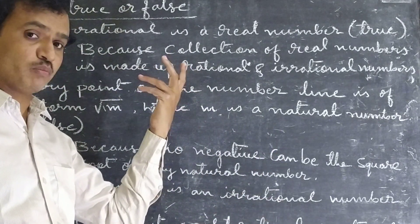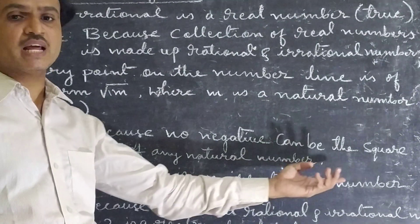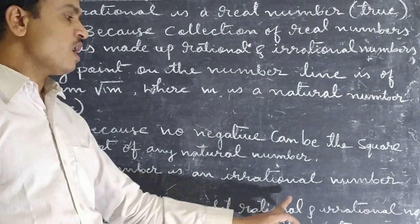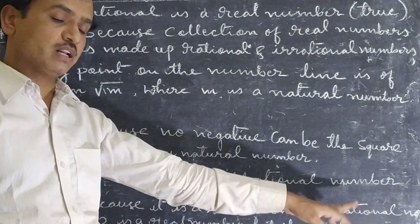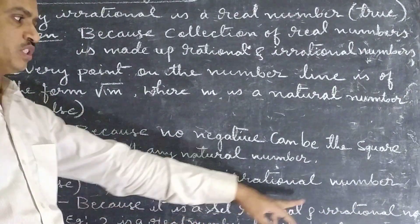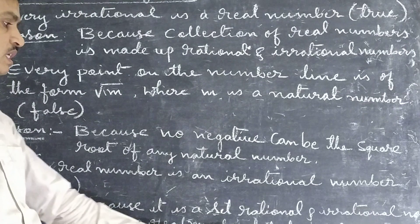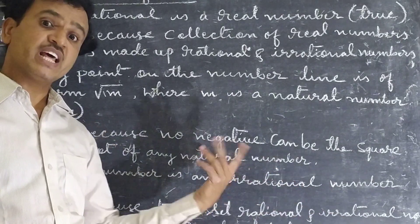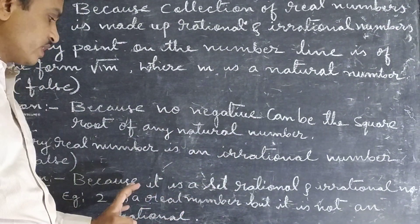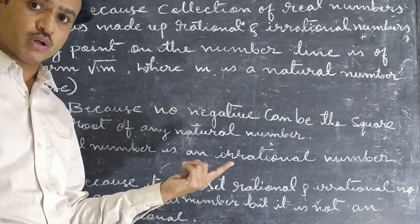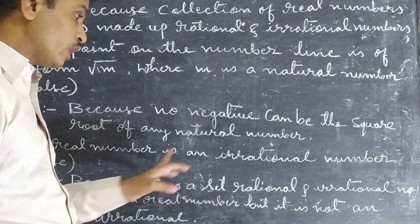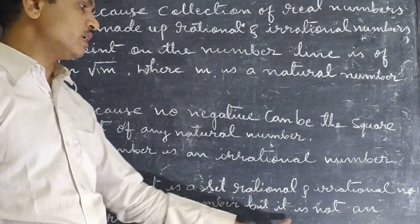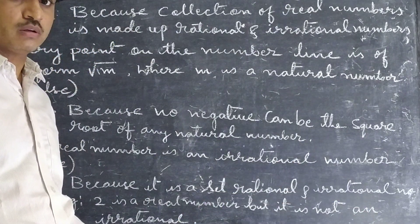It is false because there are rational numbers also. Every real number is an irrational number — that is false because real numbers are a set of rational and irrational numbers. For example, 2 is a real number, but it is not an irrational number. You can write 2 in the form P by Q, so it is a rational number. 2 is a real number but it is not an irrational number.